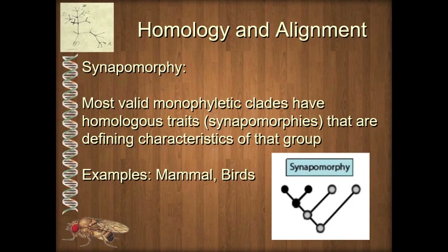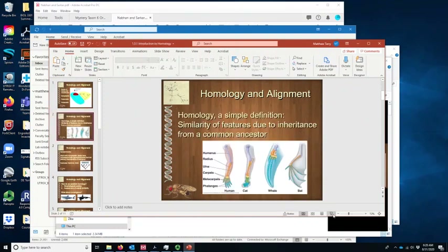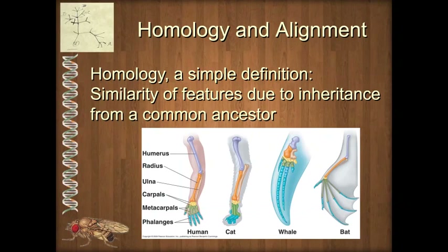Let's define homology very quickly. It's deceptively simple — once we get into it, there are some details that make it more complex, but we'll start with the simple. Homology is similarity of features that are due to inheritance from a common ancestor. Here we have diagrams of four different tetrapod vertebrates — all mammals — but we could even choose a frog, lizard, or bird and it would still work fine.